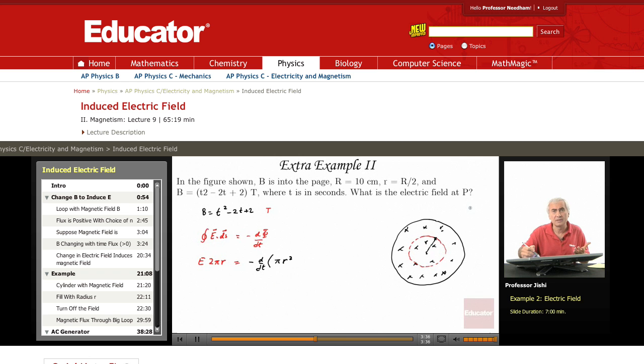...previously, when point P was here, the flux was the area times B, and the area was the whole area here, πR². Now it's πr².